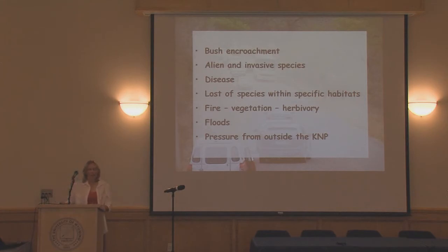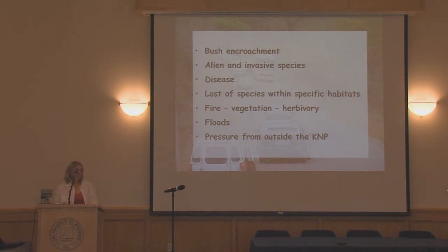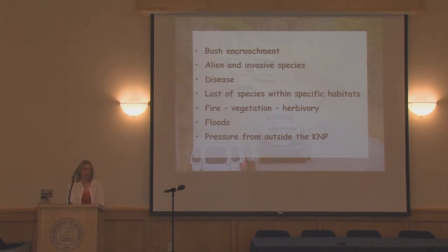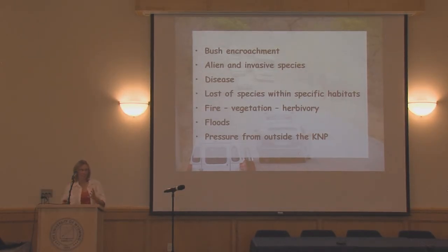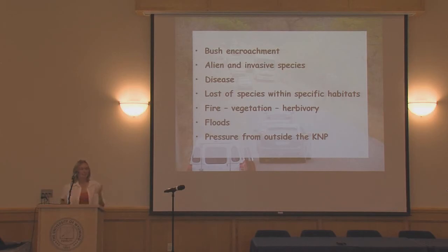We are losing species that need very specific habitats — a good example is our rare and endangered herbivores, the sable and roan in Kruger National Park, whose numbers are very low, and although we don't know exactly why, we assume it relates to the changing environment and their specific habitat needs. Another really difficult issue is fire management: we have a fire management plan, but with the changes it also needs to adapt — and fire has a big influence on vegetation in the savannah park, which in turn greatly influences our herbivores.